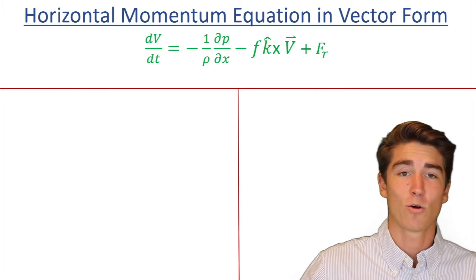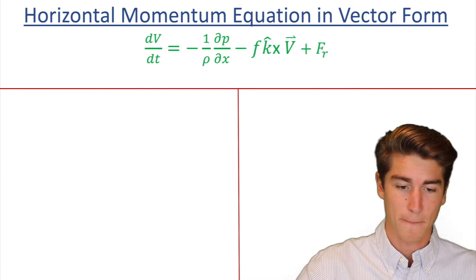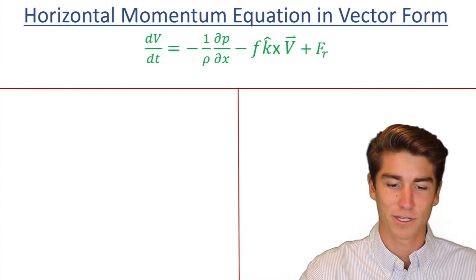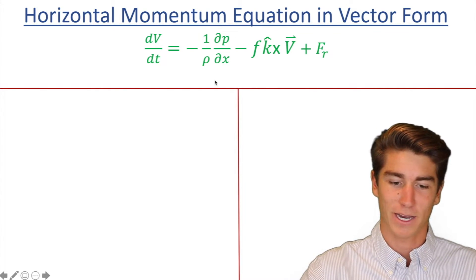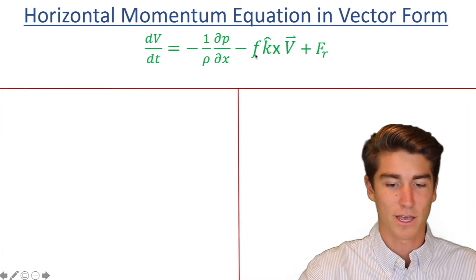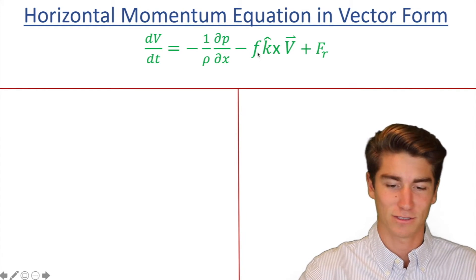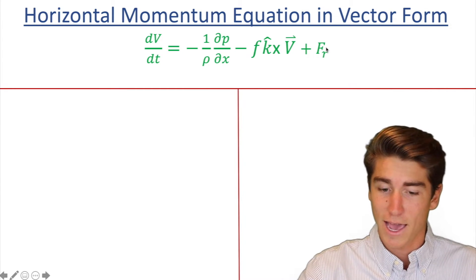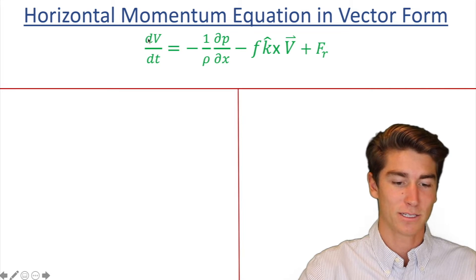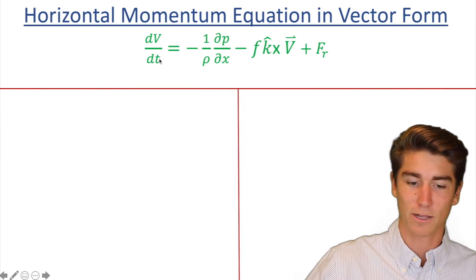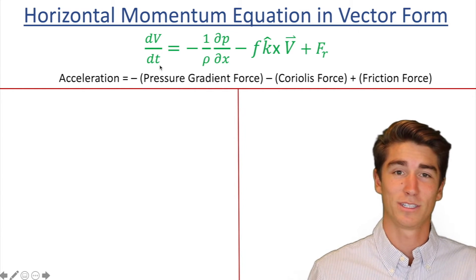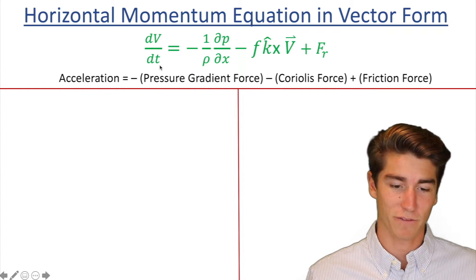And here's the horizontal momentum equation in vector form. And you see it looks a little different, but you could probably recognize some of these terms. You recognize that as the pressure gradient force. That one's got f, so you know it's going to have something to do with the Coriolis force. And it does. And then that same friction force, and this is now acceleration. You see it's now the change in velocity over time, which is literally the definition of acceleration.